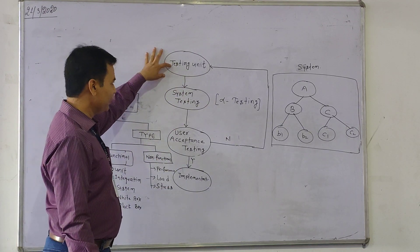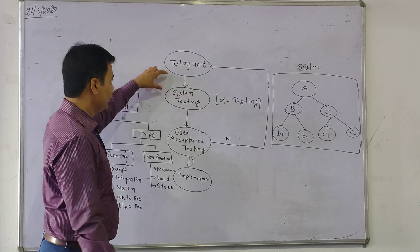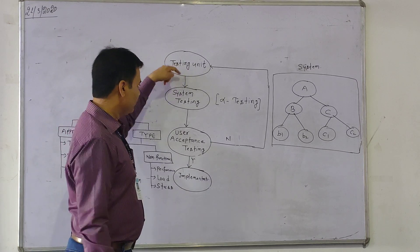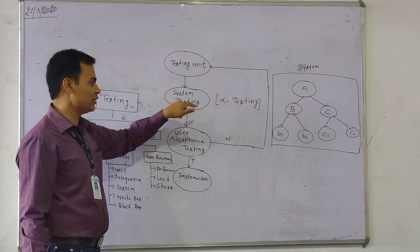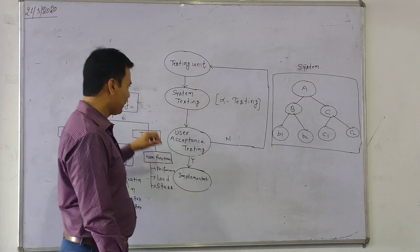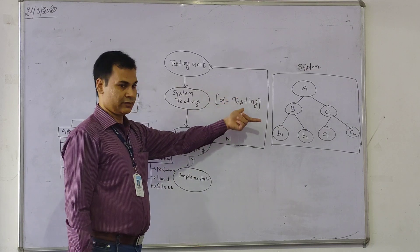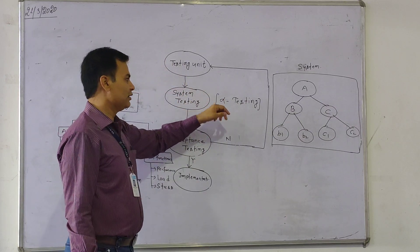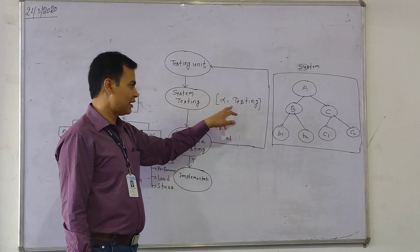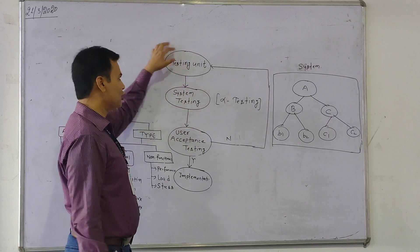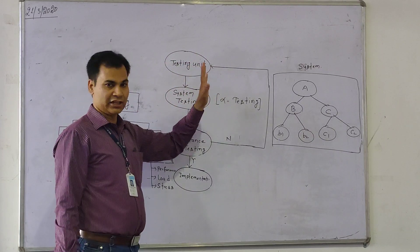First, this is the testing unit. The testing unit is a team used to test the system — it is not a single person, it is a team. The testing unit tests the system, and when the testing unit tests the system at the developer side — meaning where the software is actually developed — this approach of testing is known as alpha testing. After alpha testing, whether successful or unsuccessful, if any error is found by the testing unit, the software is sent back to the developer to remove that error, and again the software comes to the testing unit for alpha testing.